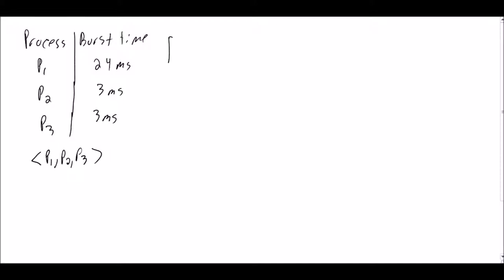So we'll start with process 1, and we'll demonstrate the process scheduling using what's called a Gantt chart. So we start at time 0. This is process 1. Process 1 has a burst time of 24.